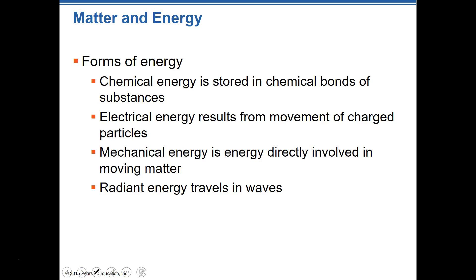There are different forms of energy: chemical, electrical, mechanical, and radiant energy. Chemical energy is stored in chemical bonds, and we release that energy by separating those bonds. Not all chemical bonds are going to release energy — there are certain ones the body utilizes to release energy. Oftentimes when releasing that energy, the body tries to store it in another form.